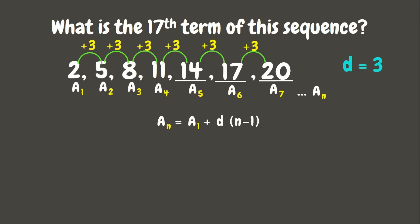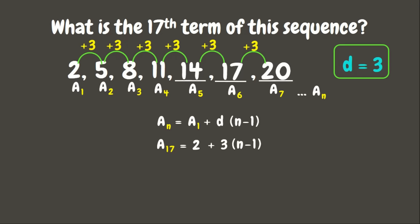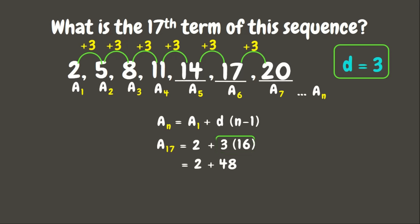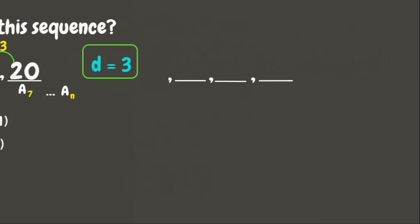Our nth term rule is a sub n = a sub 1 + d × (n − 1). Since we are looking for the 17th term: a sub 17 = 2 + 3 × (17 − 1). Using order of operations: 17 − 1 = 16, then 3 × 16 = 48, and finally 2 + 48 = 50. Therefore the 17th term is 50.